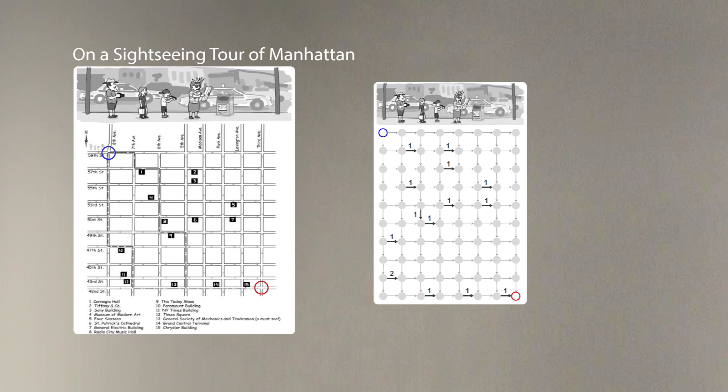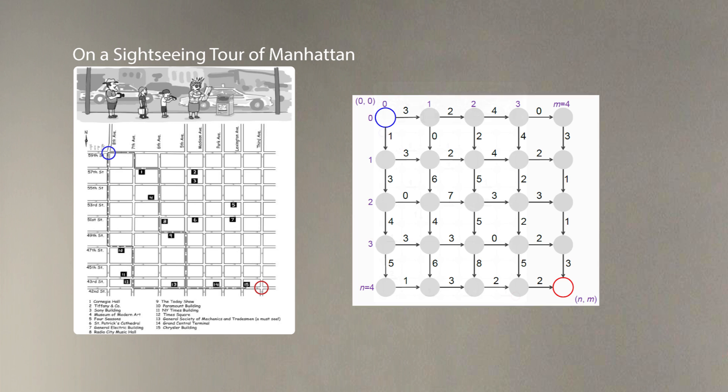We can model Manhattan as a grid and show edges in this grid where there are attractions as edges of weight one. And then our goal is to find a path in this graph that has maximum number of attractions. Sometimes computer scientists call longest path in this graph from the blue node to the red node.